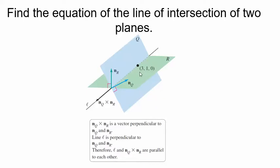If you remember your study of planes, we need two things to determine a plane: a point on that plane, and a vector orthogonal to that plane — a normal vector, or a vector perpendicular to that plane. In this picture, the vector orthogonal to the green plane is N sub R, the normal vector for plane R. And then over here, we have the vector perpendicular to plane Q — that's N sub Q, the vector normal to Q. So the green vector is perpendicular to the green plane, and the blue vector is perpendicular to the blue plane.